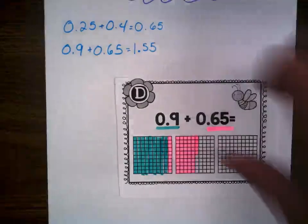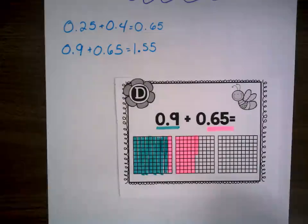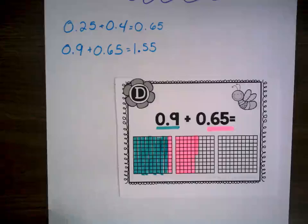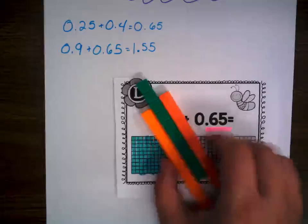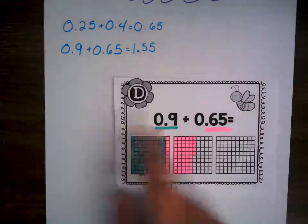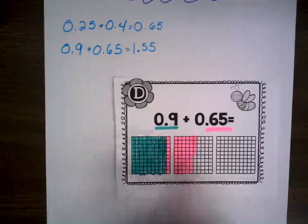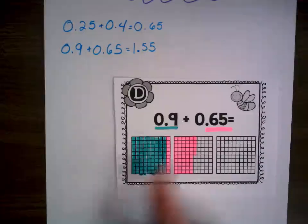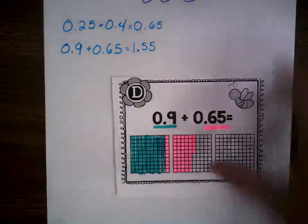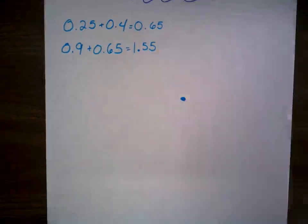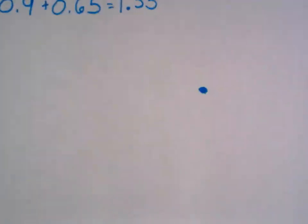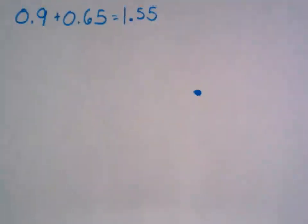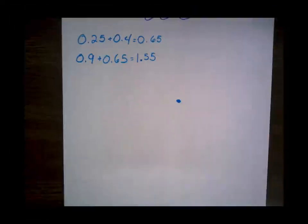So this is how we can add decimals with our models — both by using our actual base ten blocks and also by coloring in base ten block grids. I like to make sure I color code them. But you must be saying to yourself: what about when we're subtracting? What about when we're subtracting our decimals?